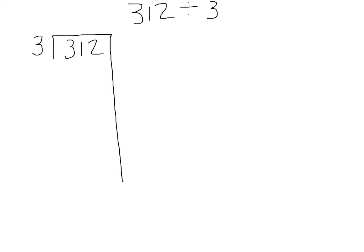Since fourth graders are often not very strong with their multiplication facts, we give them some benchmark facts to help out. We tell them to do the first three multiples of the divisor — so in this case, 3 times 1 is 3, 3 times 2 is 6, and 3 times 3 is 9.